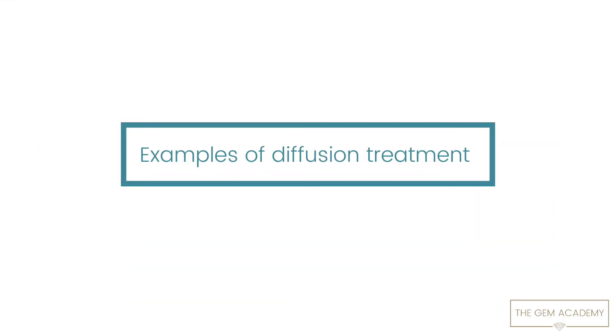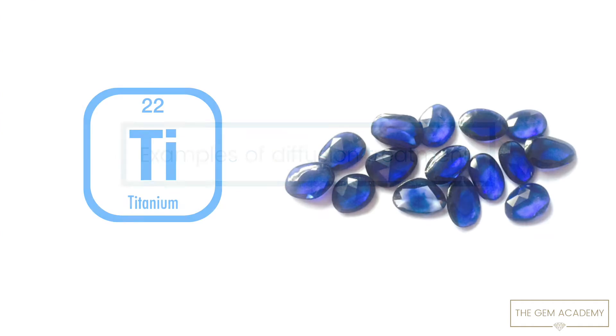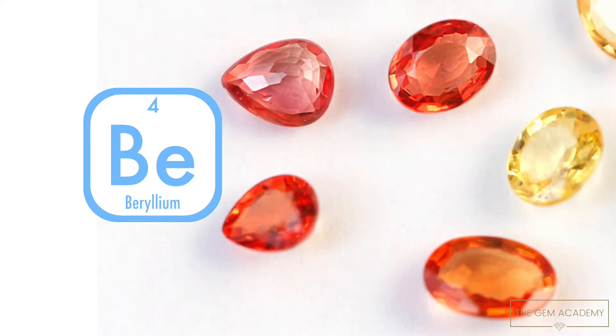The most common diffusion treatment is the diffusion of titanium into sapphire to make it blue. Beryllium can also be diffused into sapphire, which creates a series of yellow, orange and red colours.